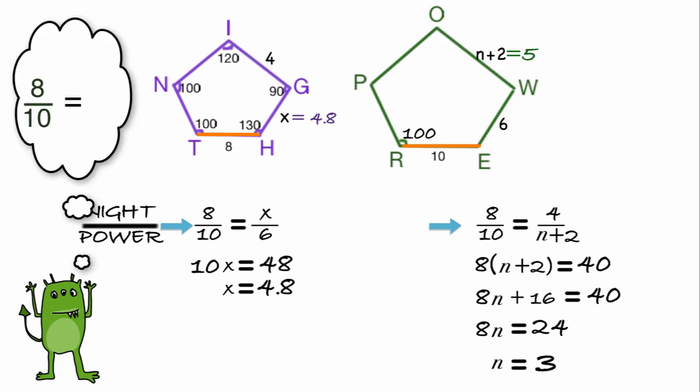You've probably noticed that 8 tenths could have been reduced to 4 fifths. And I usually would have done that. But in this case, I found some of the math was easier when I didn't reduce it.